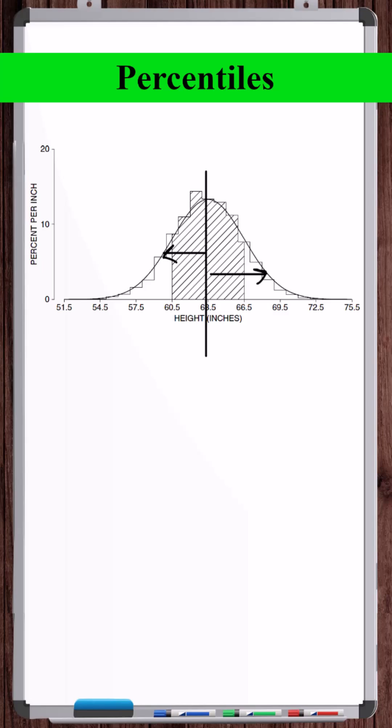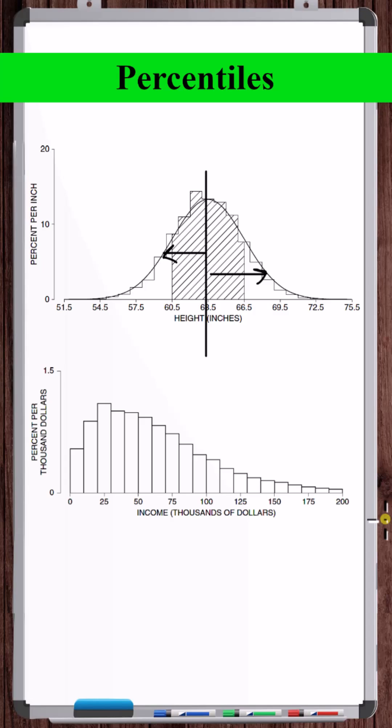However, the average and standard deviation can tend to not work quite as well for a set of data that doesn't follow the normal curve. For example, like shown here, in this case, the average is around $60,000, standard deviation around $40,000.